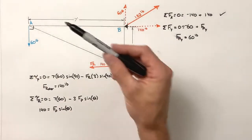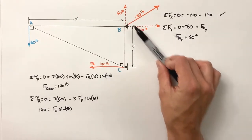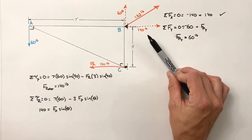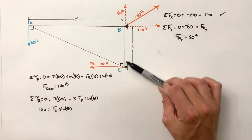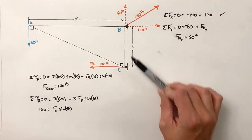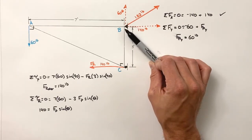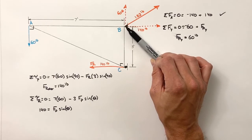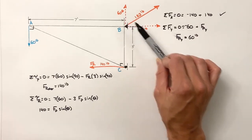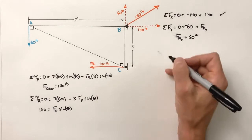But the whole point of this problem is to show you this issue that shows up sometimes. Anytime we have a situation where this load is acting in a direction where the roller can't support the load, we'll almost always find that there are forces by the pin in two axes. Okay?